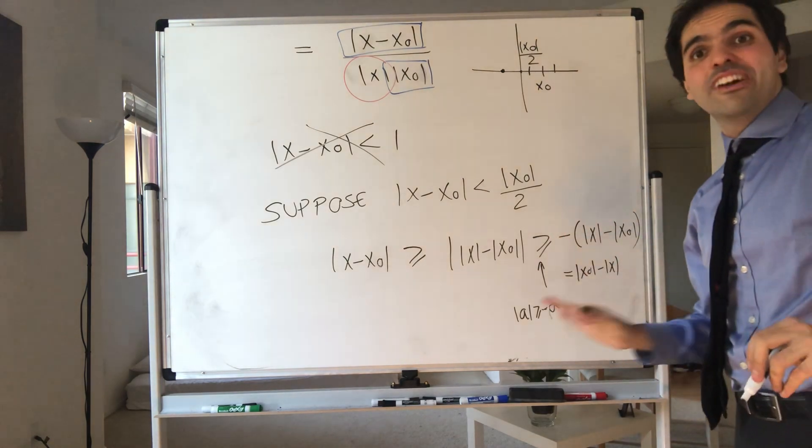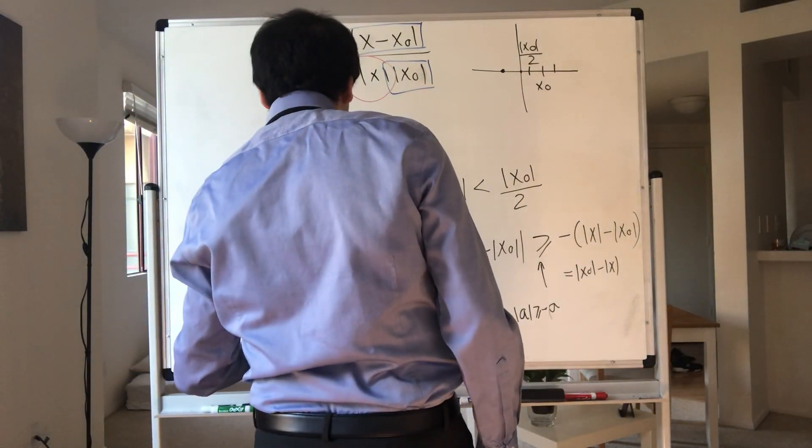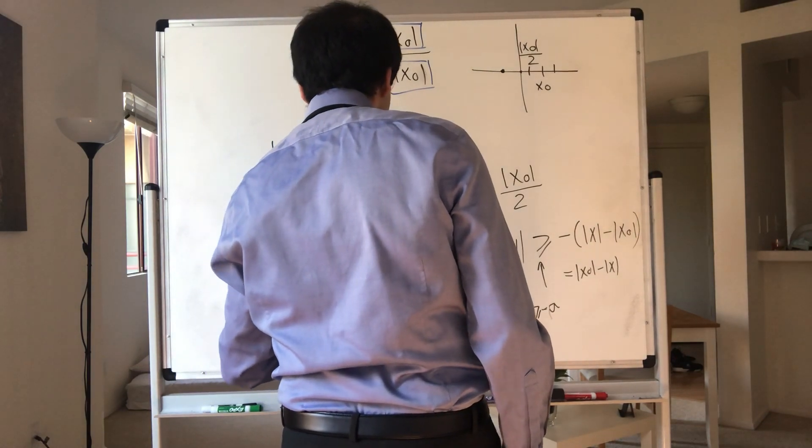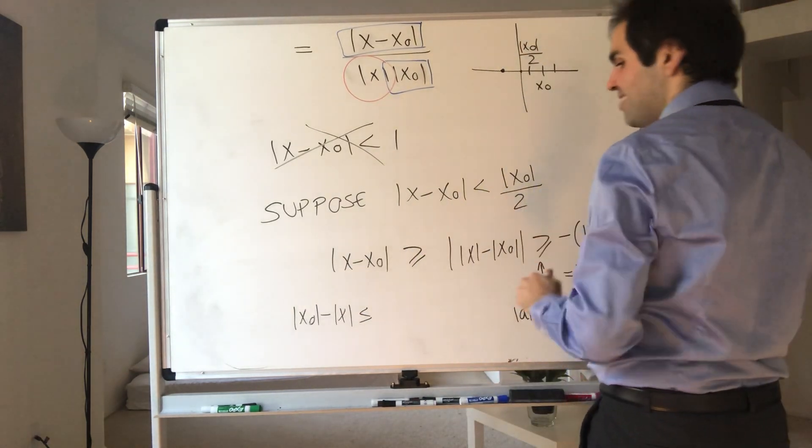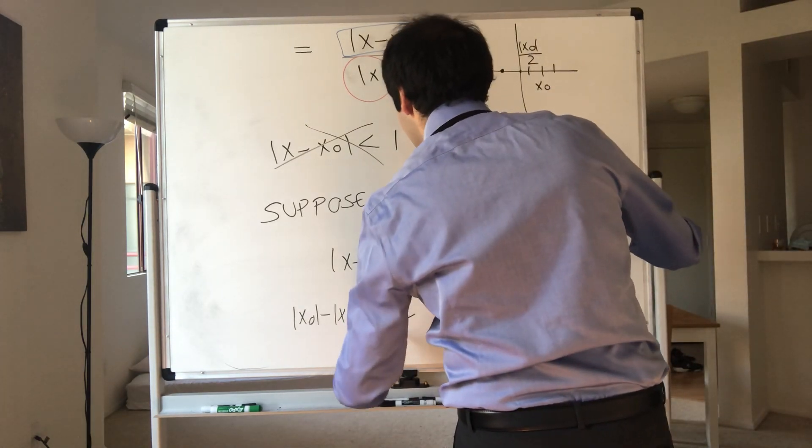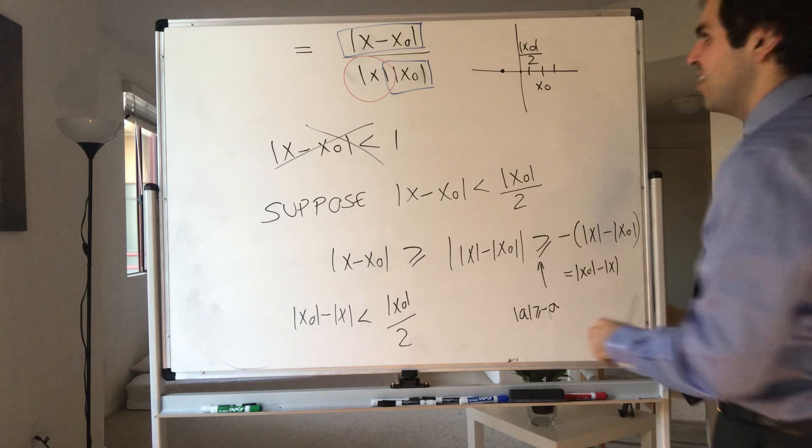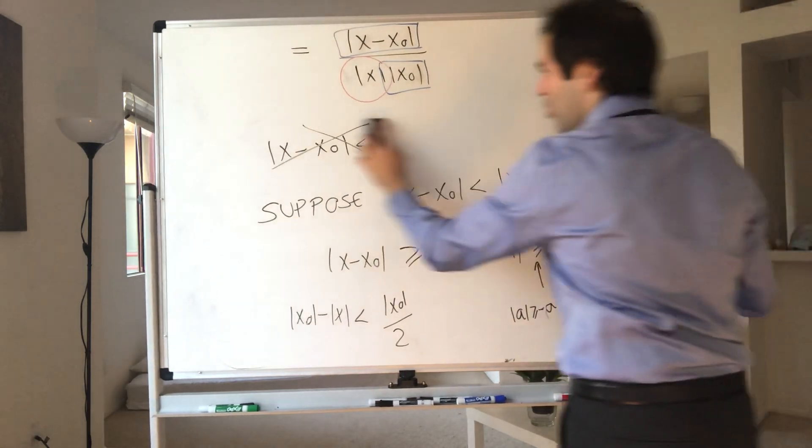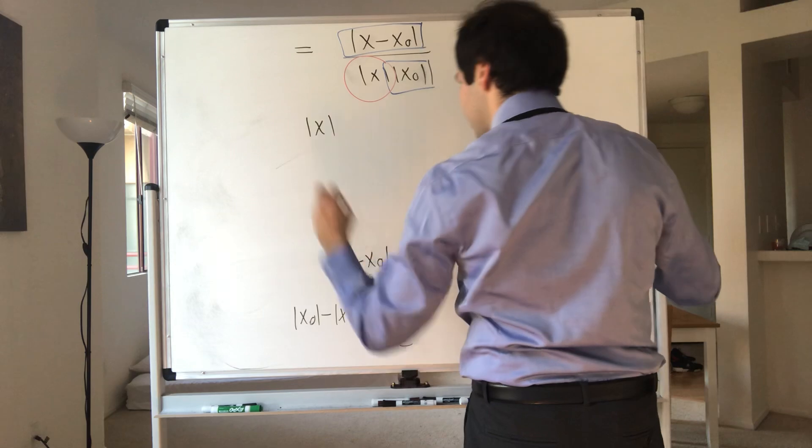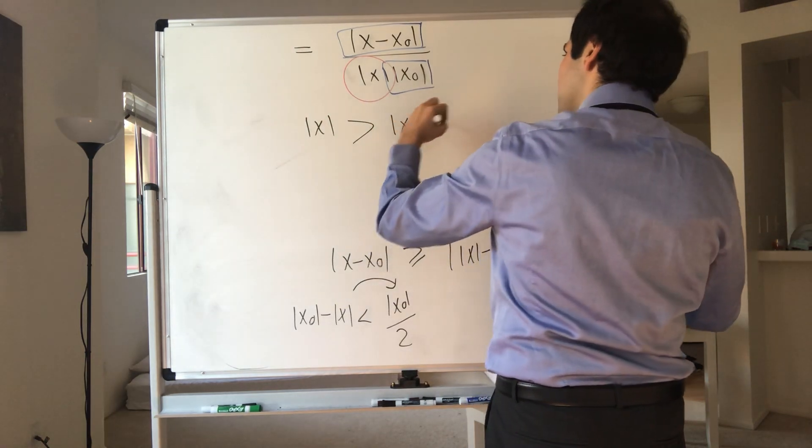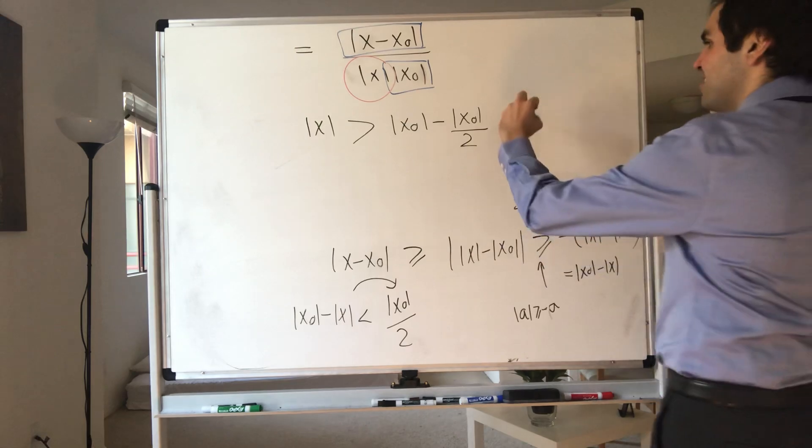So, in particular, this is x naught minus absolute value of x. I promise you it'll make sense. Then what we get is x naught minus x. If you follow this chain, you get it's less than or equal to x minus x naught, but we know x minus x naught is less than x naught over 2. So in the end, we get x naught minus x is less than x naught over 2. And therefore, what we get is absolute value of x is bigger than x naught minus absolute value of x naught over 2, which is x naught over 2.